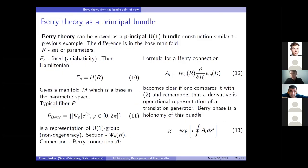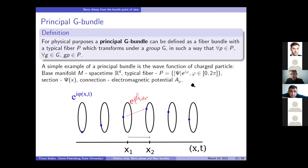So, in essence, Berry theory differs from the previous example only in the basic manifold M. For example, let R be a set of parameters. Let's fix the total energy, which corresponds to the assumption of adiabaticity in the classical derivation of Berry phase. Then the full Hamiltonian expressed in terms of parameters gives you the equation in parametric space. This equation defines a certain manifold M in the parameter space. You consider it as a base. The fibers are the same as in the previous example. These fibers, which are wave function modular, its modulus.